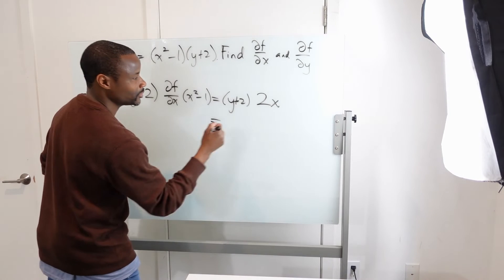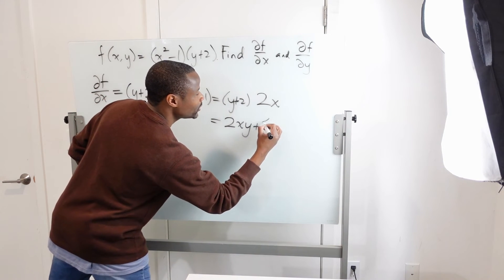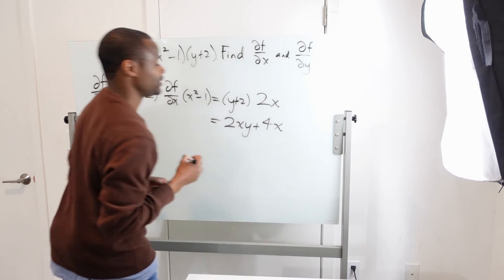Derivative of that goes to 0. So distribute this. You get 2xy plus 4x. And that's it, we're done.